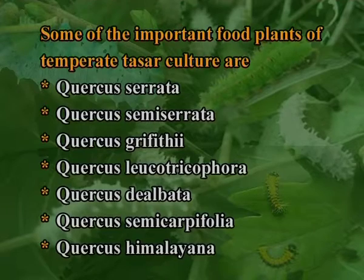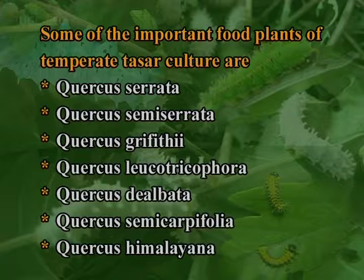Some of the important food plants of temperate tusser culture are Quercus serrata, Quercus griffithii, Quercus leucotrichophora, Quercus dilatata, Quercus semicarpifolia, and Quercus himalayana.